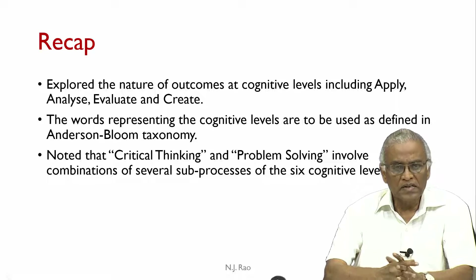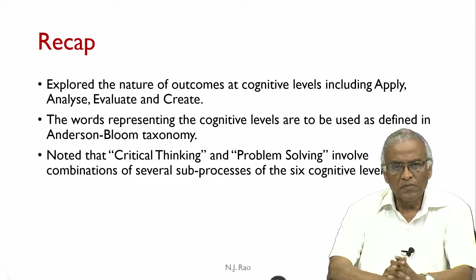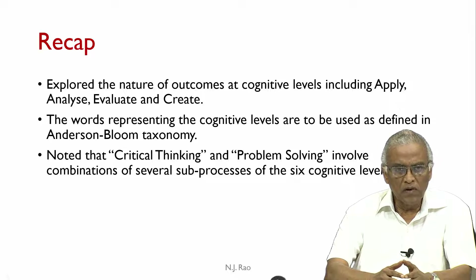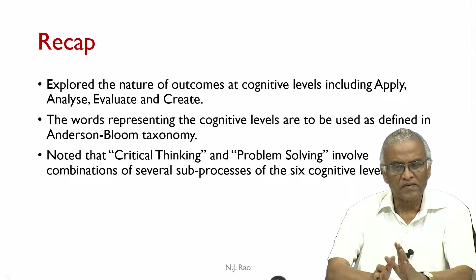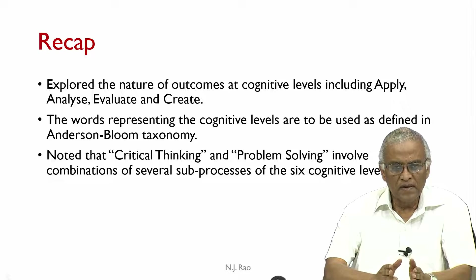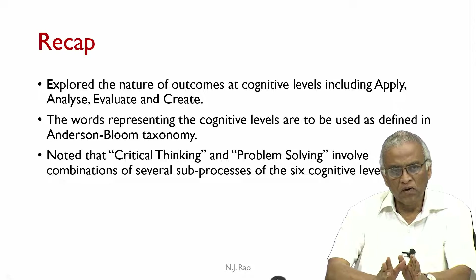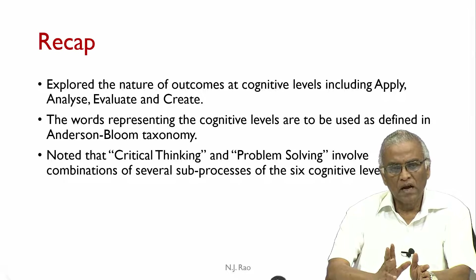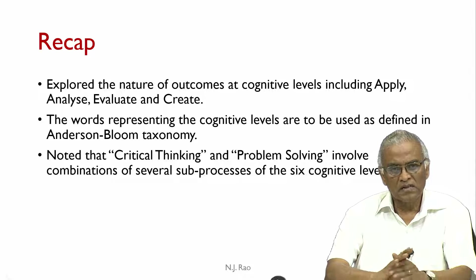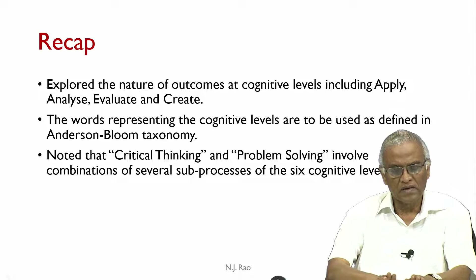We also noted that critical thinking and problem solving involve a combination of several sub-processes of the six cognitive levels. Each cognitive level has several sub-processes, so critical thinking involves some combination and sequence of sub-processes that come under the six cognitive levels — that is the key point to remember.